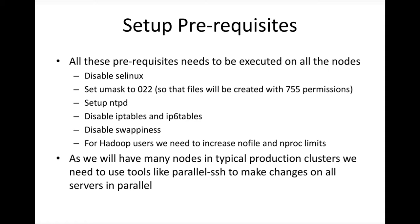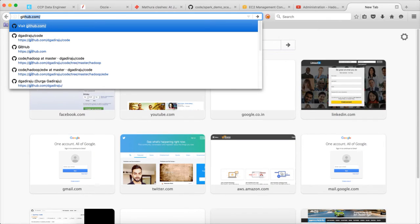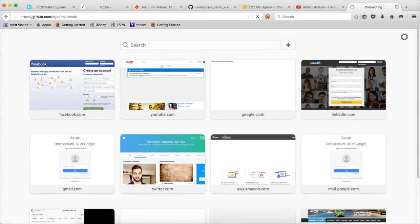Typically we will use some tools to do that. One of the simplest tools for this purpose is parallel SSH. Instead of going on to each and every node and running these commands individually, we can use parallel SSH, which we have already set up. You can get the script that needs to be executed by going to my GitHub code — github dgadraju code.